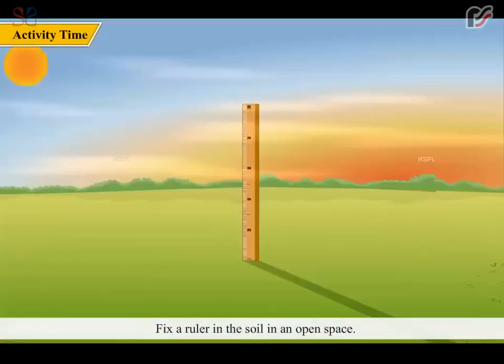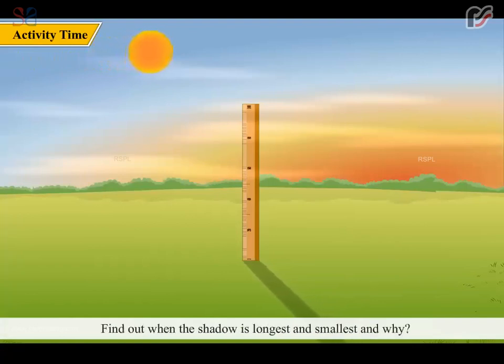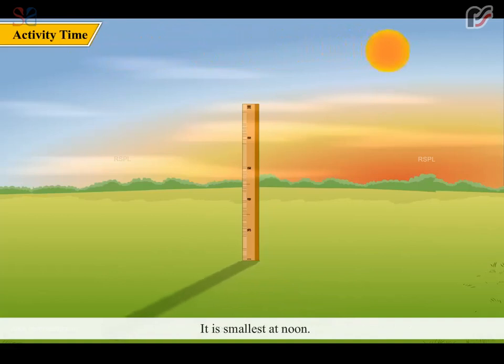Fix a ruler in the soil in an open space. Measure its shadow at different times of the day. Find out when the shadow is longest and smallest and why. The shadow is longest in the morning and at evening. It is smallest at noon.